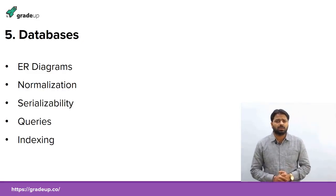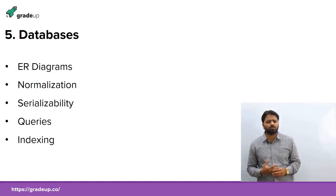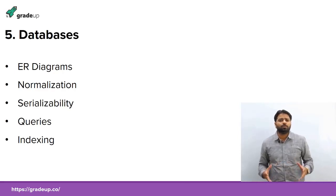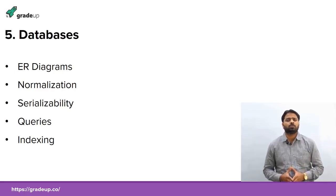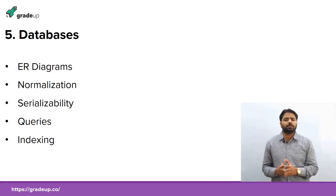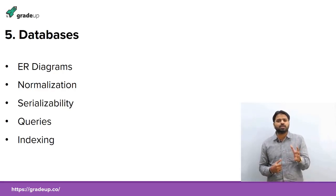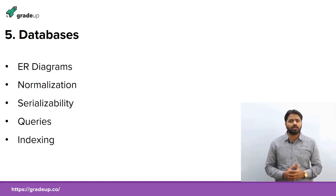The next very easy subject is Database. Almost 95 percent of the questions are easier. Practice ER diagrams, finding number of tables from given ER diagrams, and normalization — a very easy topic. Try to solve questions on finding functional dependencies, canonical covers, and identifying which normal form is right for given functional dependencies. Also go for serializability, which is frequently asked. Conflict serializable is asked many times and is a very easy question.